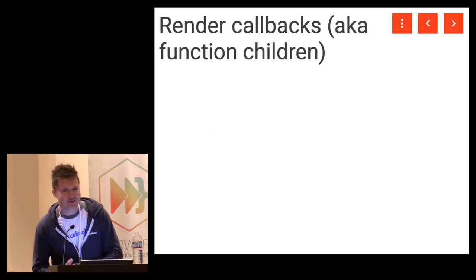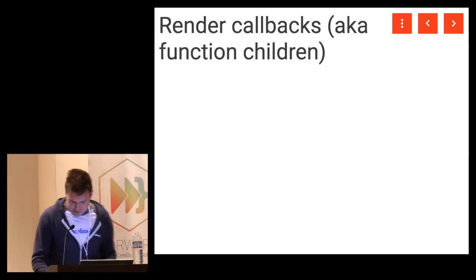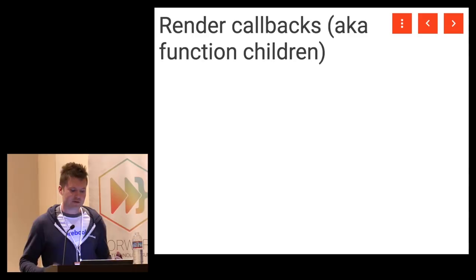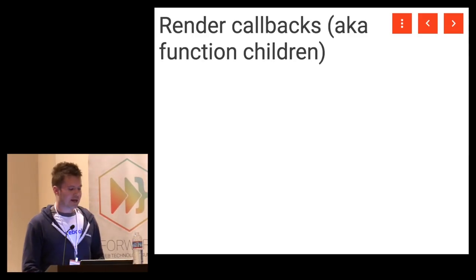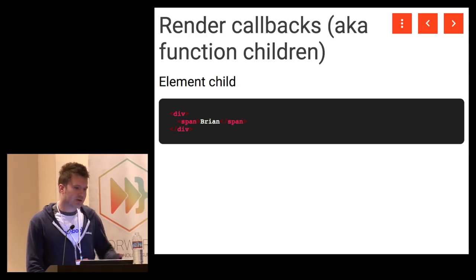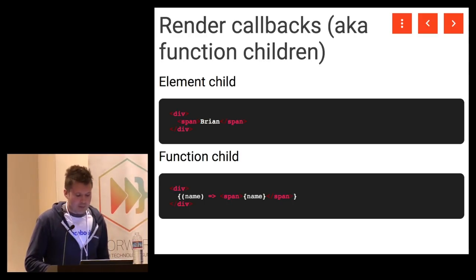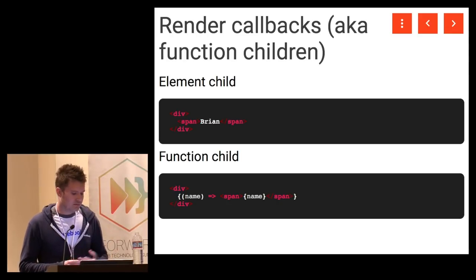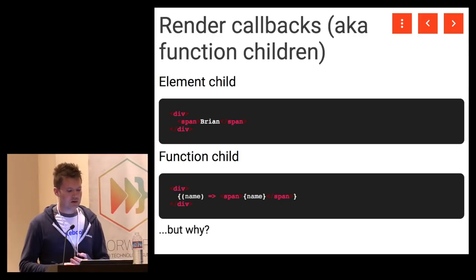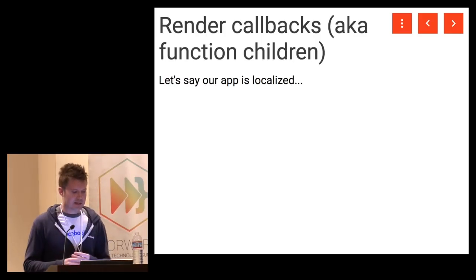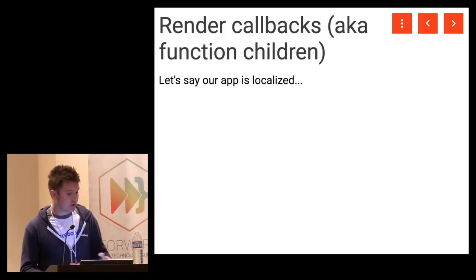Before diving into windowing, I want to mention a pattern I've found really helpful as a library developer: render callbacks. Typically a React element's children are other React elements, but you can also pass functions as children, and functions can return React elements. Let's say we have an app that's localized — we don't want each component that requires localization to worry about loading it. We could have a higher-order component that loads the locale for us, whether from a session, API, or local storage.